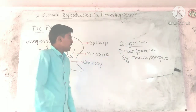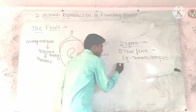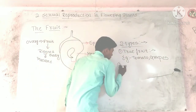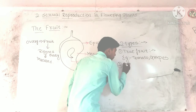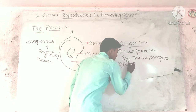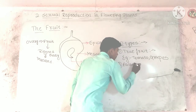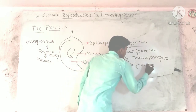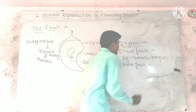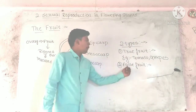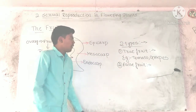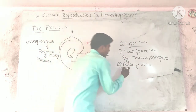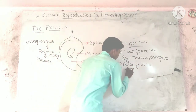Then, false fruit. False fruit develops from parts other than the ovary. It is called false fruit. For example, apple.